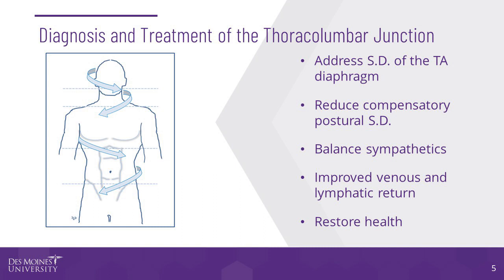Treating this region may help reduce postural compensatory mechanisms, balance the sympathetic nervous system through viscerosomatic reflexes, improve gait, and decrease pain. Treating somatic dysfunction of the thoracolumbar junction is effective in improving venous and lymphatic return; however, it is best integrated as part of a whole body respiratory circuitry model approach.